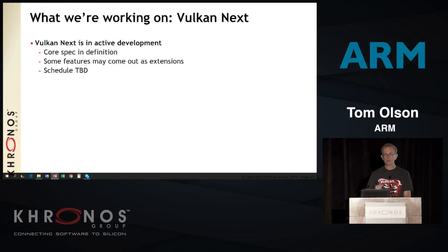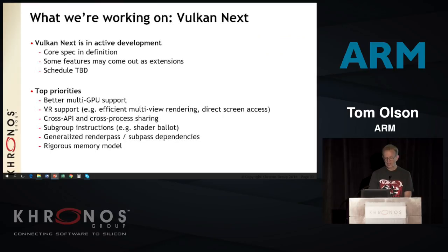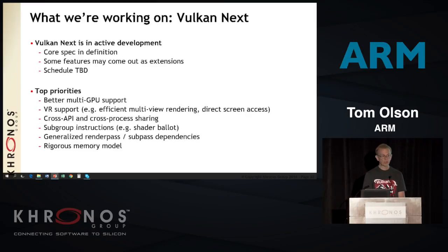The other 50% of our time is going into Vulkan next. We are actively working on defining the core spec and also on some extensions which fill gaps we've noticed or people have pointed out. I can't commit to a schedule — I've learned my lesson — but we're working on it steadily. We have identified our top priorities: multi-GPU improvements so you can render to a texture with one GPU and consume it in another; VR support including multi-view, synchronization and sharing; cross-API and cross-process stuff; subgroup instructions recently added to SPIR-V that we're going to expose; improvements to render pass; and tightening up the memory model, which right now is not very well specified.